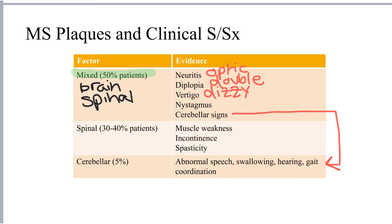About 30% to 40% of patients present with a more spinal-focused presentation. These are individuals who have lesions primarily in the spinal cord. The main signs and symptoms in these individuals are muscle spasticity and incontinence.